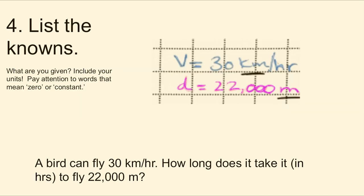Step four, identify your knowns and include the units. Pay attention to key words that hint at value of zero or constant values. Our velocity is 30 kilometers per hour and our distance is 22,000 meters.